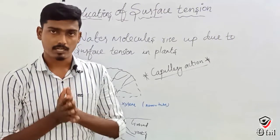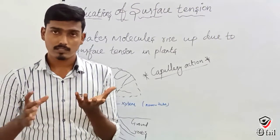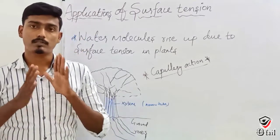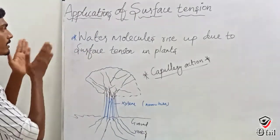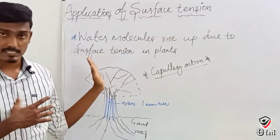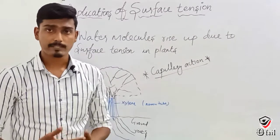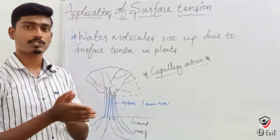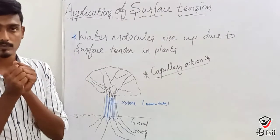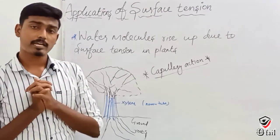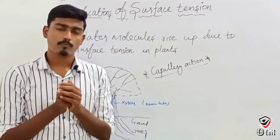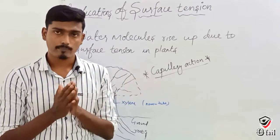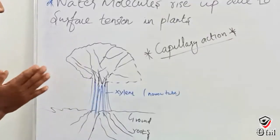One important application is in water and plants. The roots are distributed in the ground, and water rises through them due to surface tension — this is called capillary action. When a liquid is inserted into a small tube, it rises or falls based on the cohesion or adhesion property we discussed in the last video.